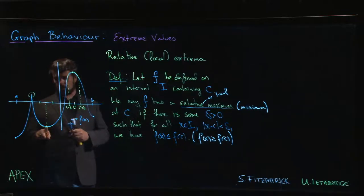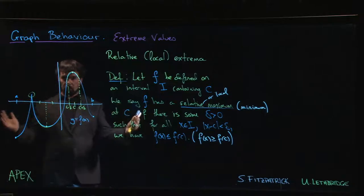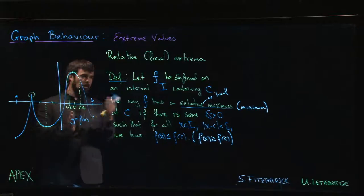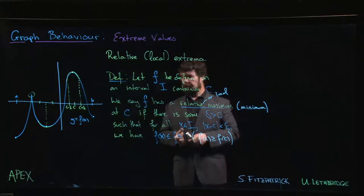It's not necessarily the smallest y value overall. There's a whole bunch over here that are smaller, but for this part of the graph it's the smallest that we see. That's what we mean by relative or local. We're not looking at the whole domain, just a piece of the domain. So it's the biggest value on some piece of the domain.